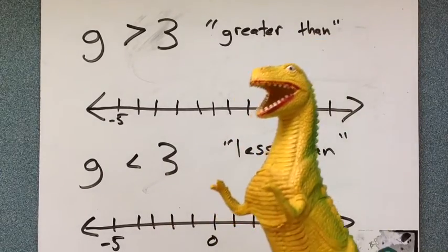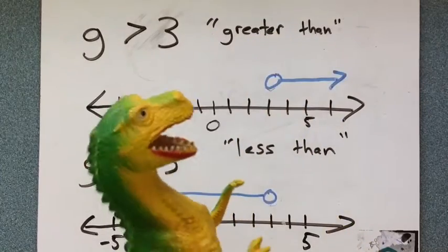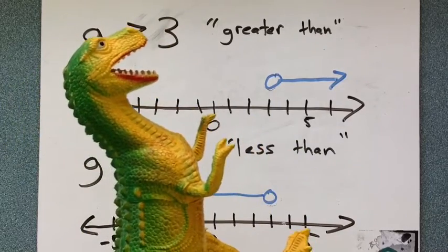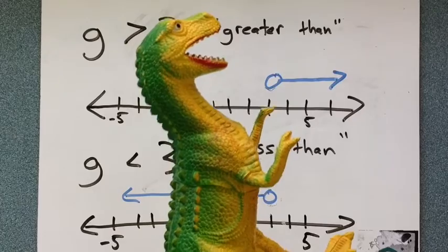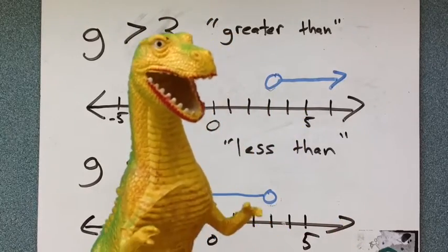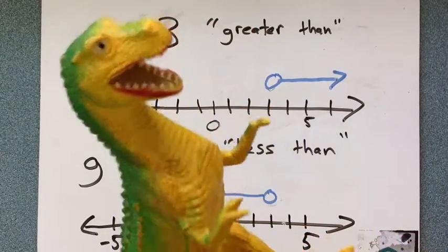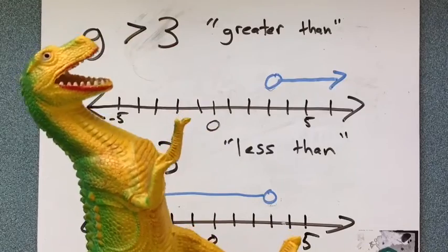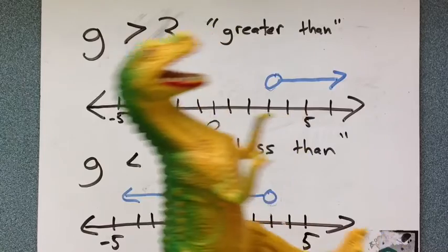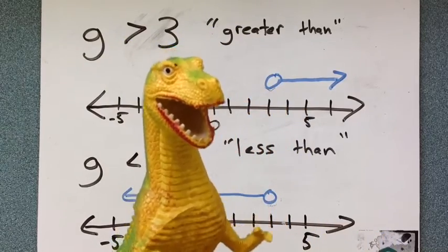Now let's see how we graph it on the number line. As you can see, I've graphed it here. G is greater than 3. So I counted 0, 1, 2, 3. And I have a little open circle. Now that open circle is really important. We'll come back to that later. So this blue line represents all values of G. So G could be 4, because 4 is greater than 3. It could be 5, because 5 is greater than 3. It could be 6 million, because 6 million is greater than 3.